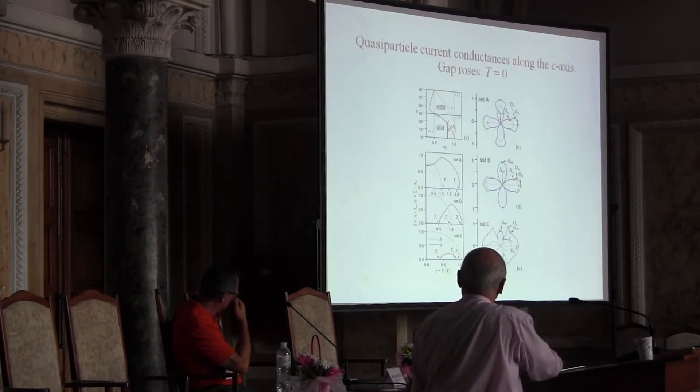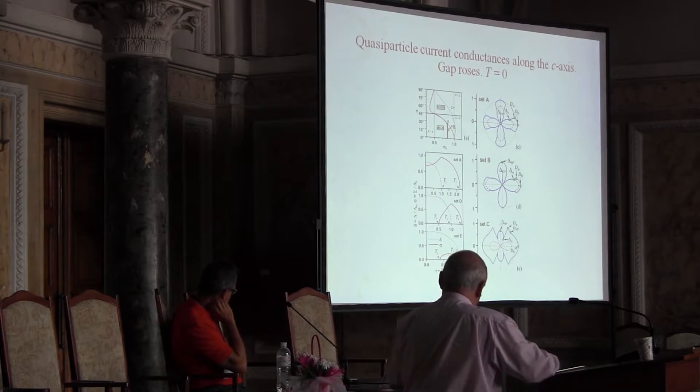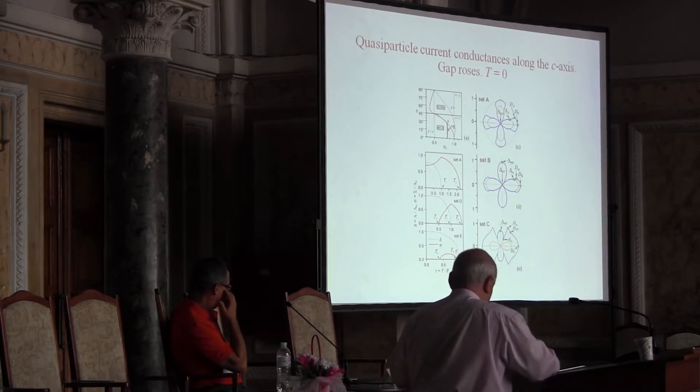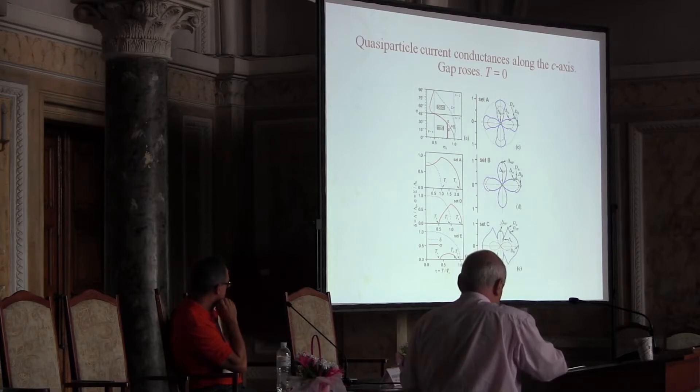We should solve those equations and obtain the self-consistent solutions and obtain the results with quasi-particle conductance. This interference of two order parameters, they have their own dependence on temperature, but when they compete they distort the actual dependence of their competitor. That is why you should make it self-consistently and it's very important.